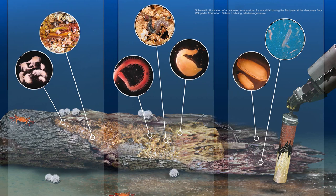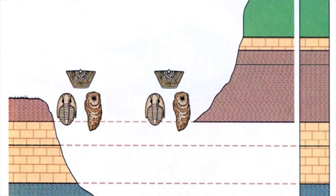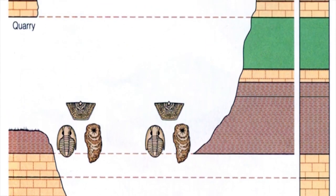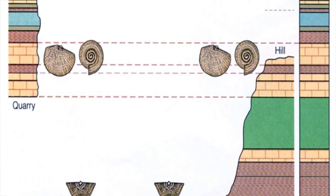Then we have Steno's third law, the law of faunal succession. When we're lucky enough to have sedimentary rocks that actually have pieces of critters and plants in them, we have fauna and flora — organisms preserved in those units. The law of faunal succession says that the fossils you find in the units at the bottom must be older than the fossils you find at the top. It's sort of like the law of superposition, but it includes organisms.